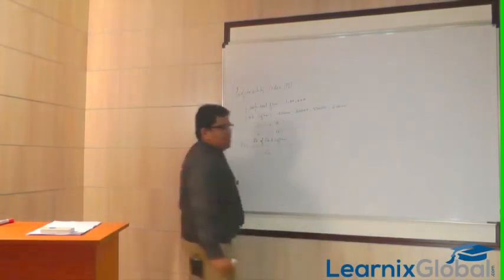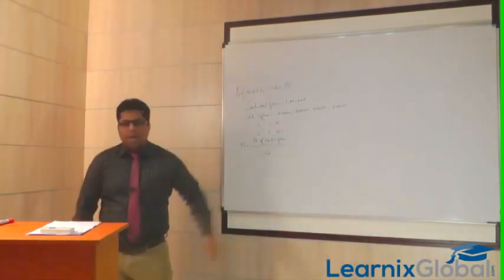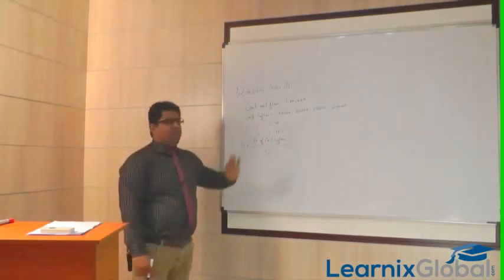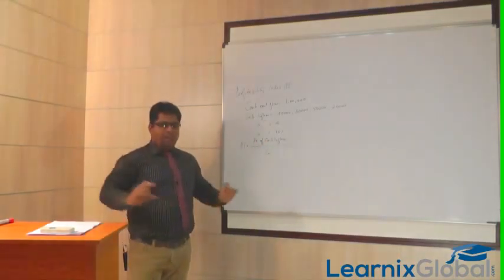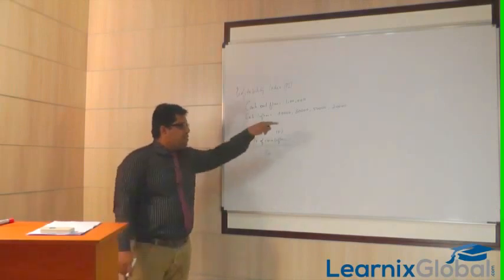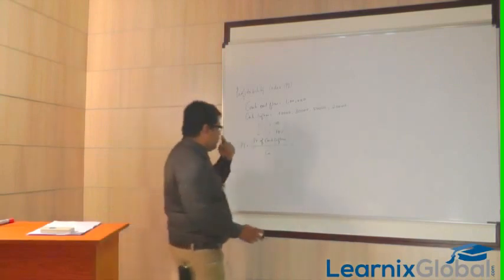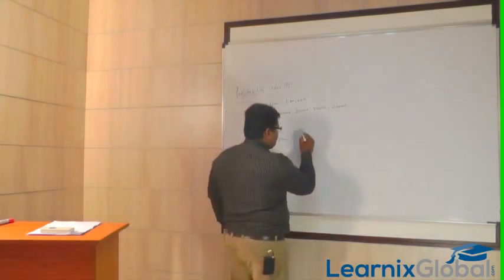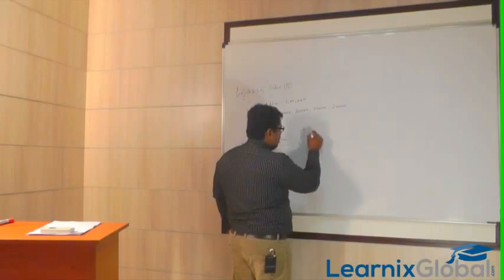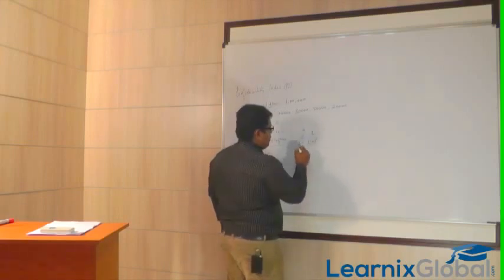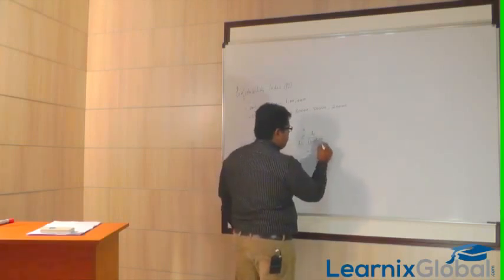If it is lump sum, the inflow will not happen every year — it may happen only at the end. If it is annuity, every year the same amount: 40,000, 40,000, 40,000, 40,000. But this is uneven cash flow. So we use the formula: summation from t equals 1 to n of A_t divided by (1 + i) to the power t, divided by cash outflow.